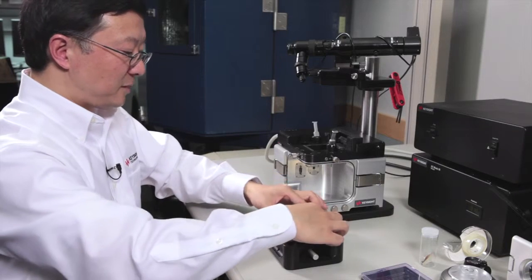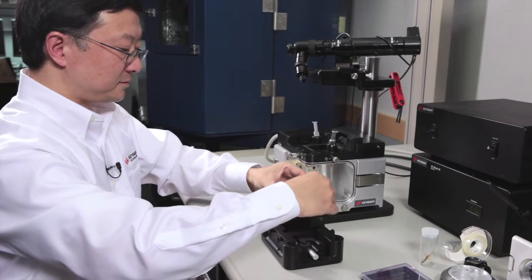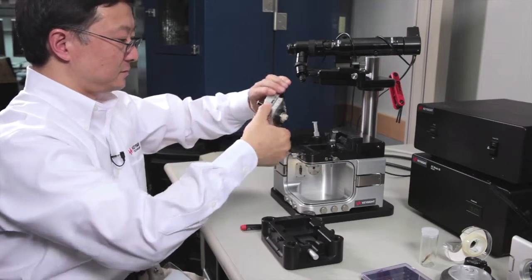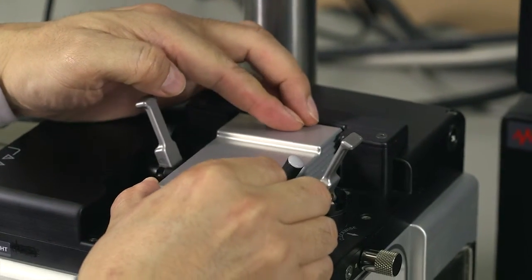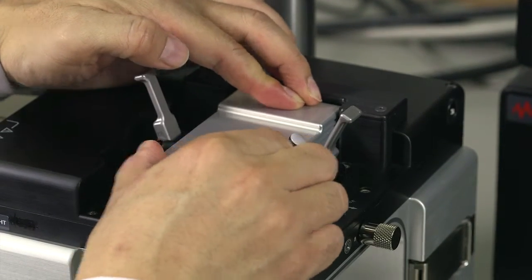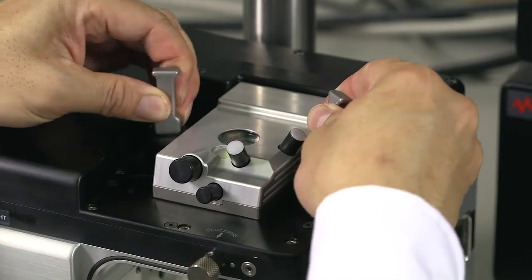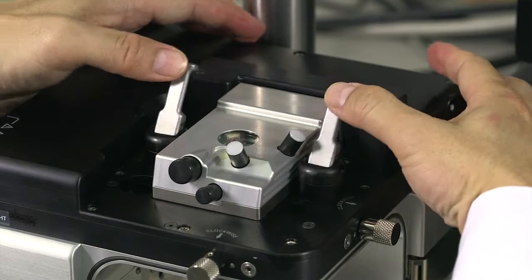Next, we pick up the scanner, insert it into the AFM body, rotate the two levers, and lock down the scanner.